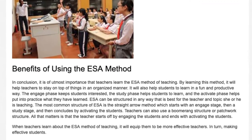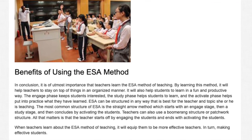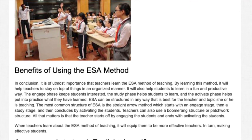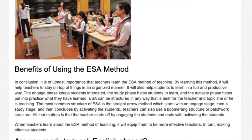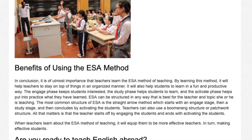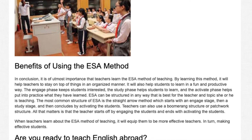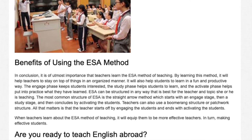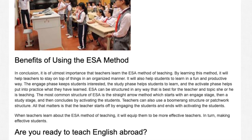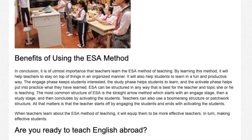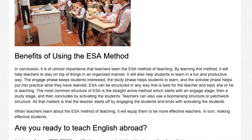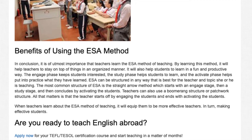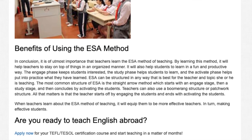Benefits of using the ESA method. It is of utmost importance that teachers learn the ESA method of teaching. By learning this method, it will help teachers stay organized and help students learn in a fun and productive way. The Engage Phase keeps students interested, the Study Phase helps students to learn, and the Activate Phase helps put into practice what they have learned. ESA can be structured in any way that is best for the teacher, and the most common structure is the Straight Arrow method — Engage, Study, then Activate. Teachers can also use a Boomerang Structure or Patchwork Structure, as long as the lesson starts with Engage and ends with Activate.